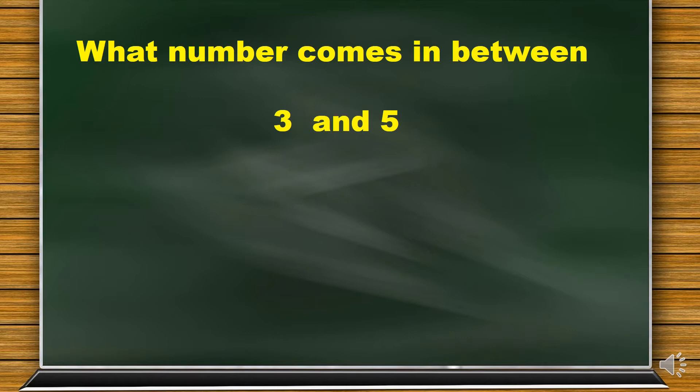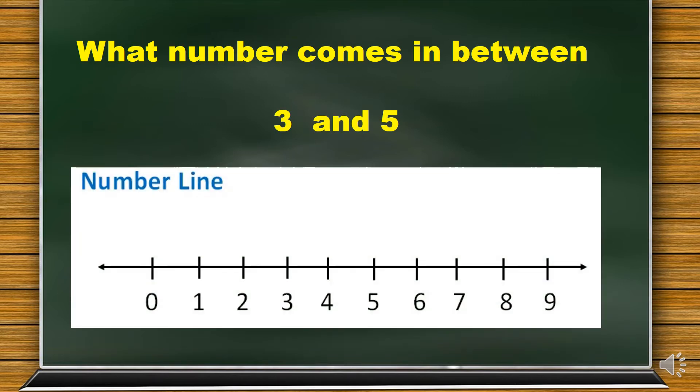What number comes in between 3 and 5? This is the number line. So we will start from 3. So what is after 3? It is 4. And what is in front of 5? It is again 4. So between 3 and 5 comes number 4.